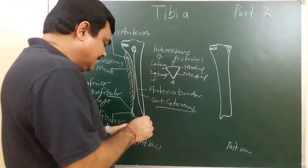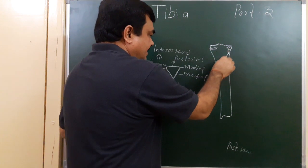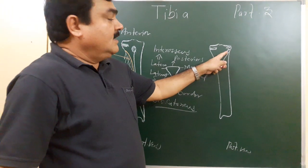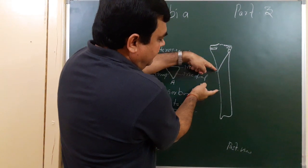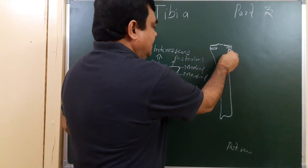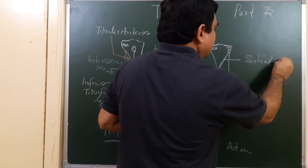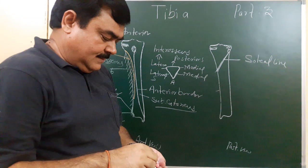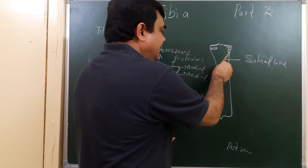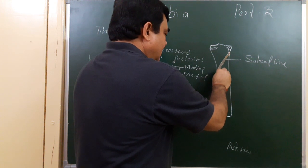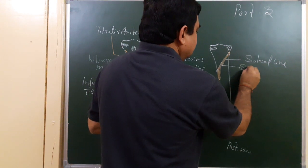Now the posterior surface. On the posterior surface there is a ridge which extends from the facet for the fibula to the junction of the upper one-third and middle one-third. This line is known as the soleal line. This soleal line gives attachment to the soleus muscle, which takes origin from here.